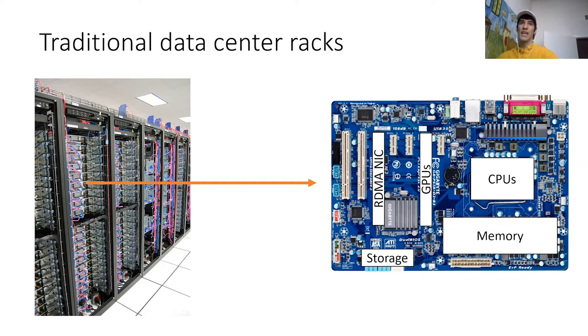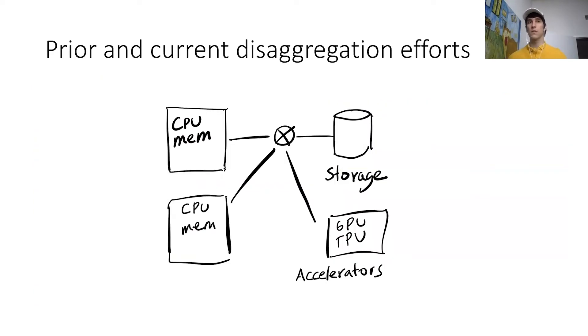All of these resources are going to be collocated on the same board. In contrast, in disaggregated systems, some of these resources are going to be taken out—in other words, disaggregated—and are going to be accessed via fast network. For example, nowadays it is fairly common to see storage be disaggregated.